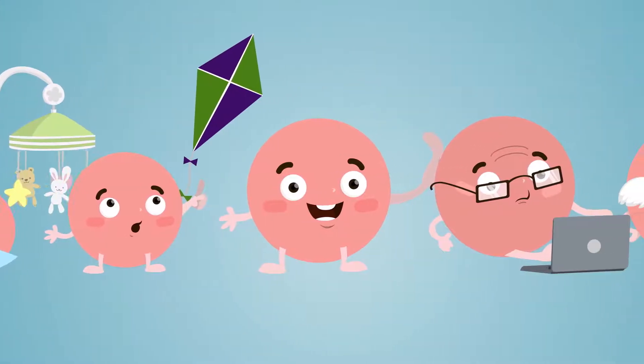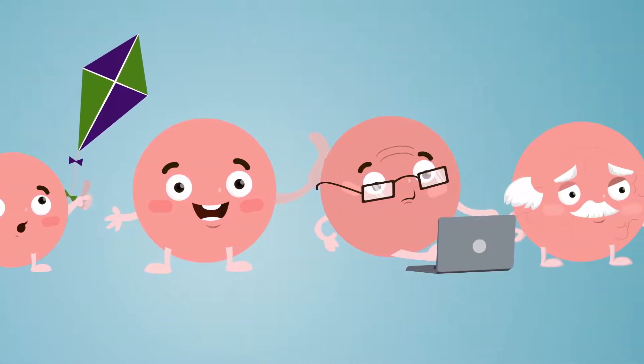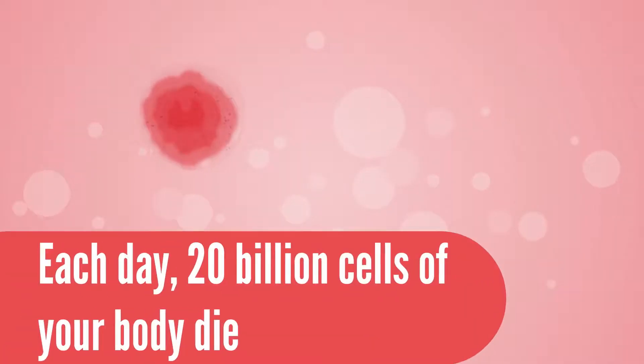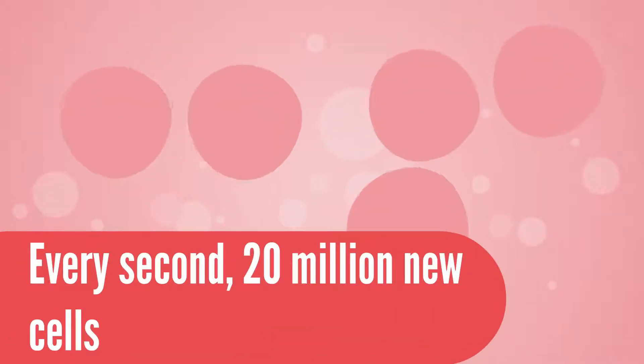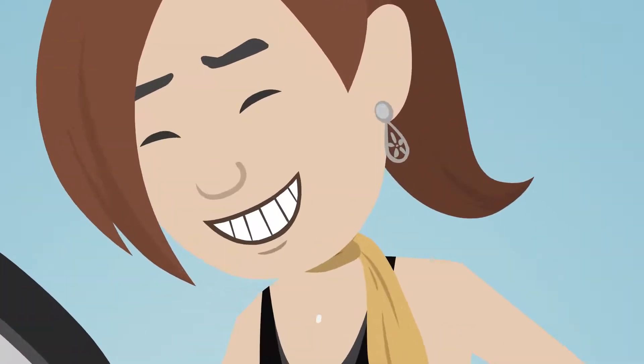Cells have their own life cycle. They die and regenerate constantly. Each day, 20 billion cells of your body die, but they are replaced by new ones. Every second, approximately 20 million new cells are produced.